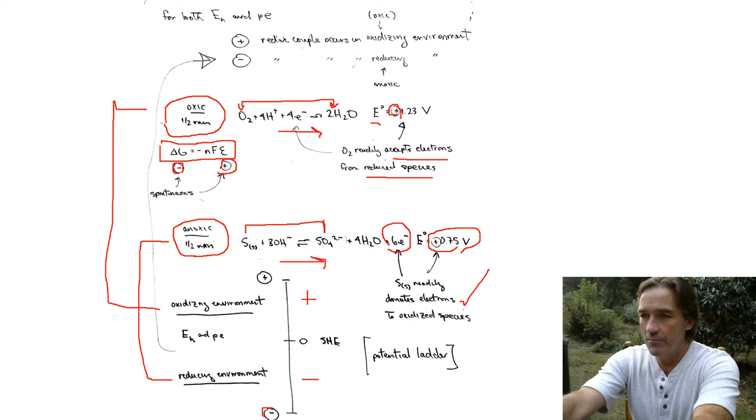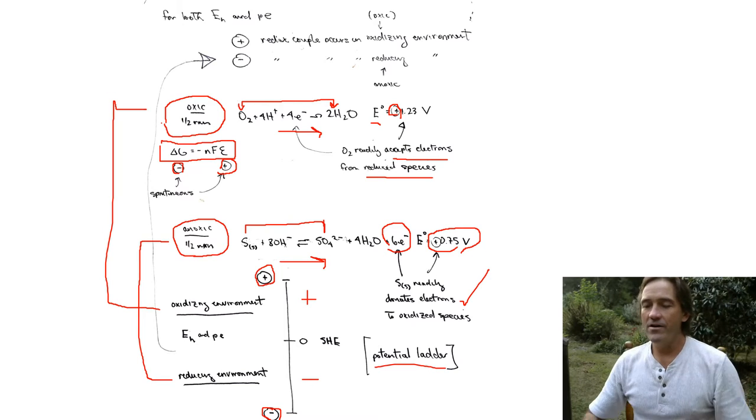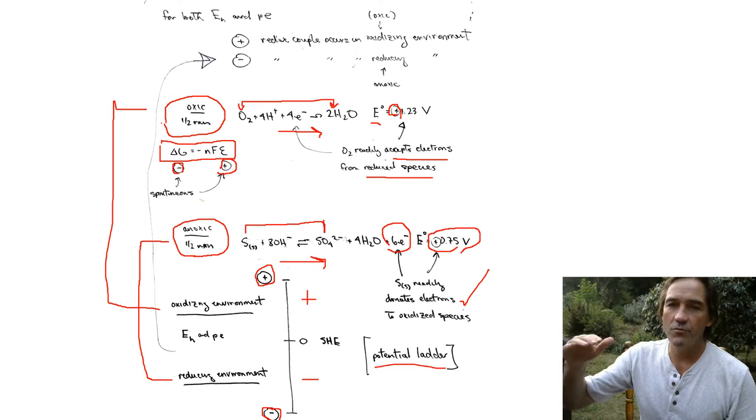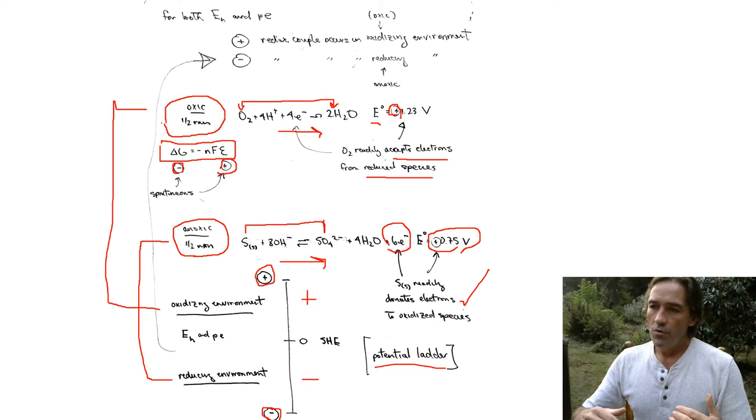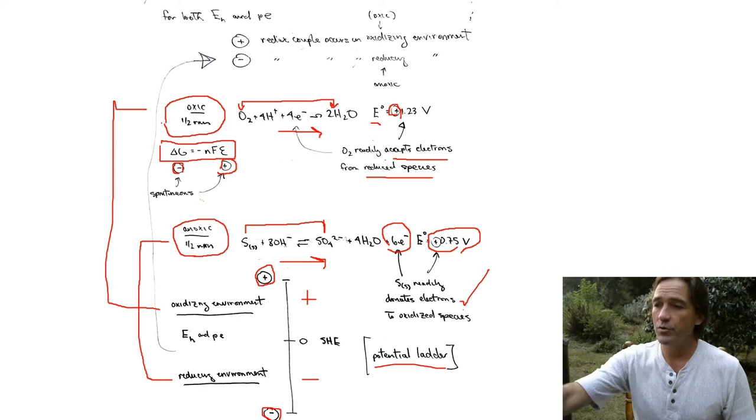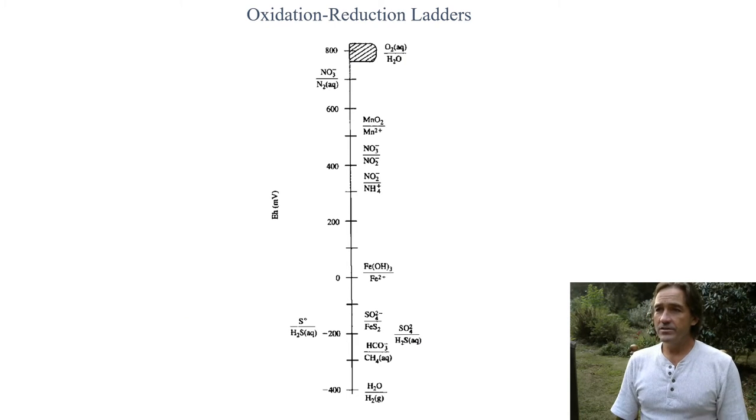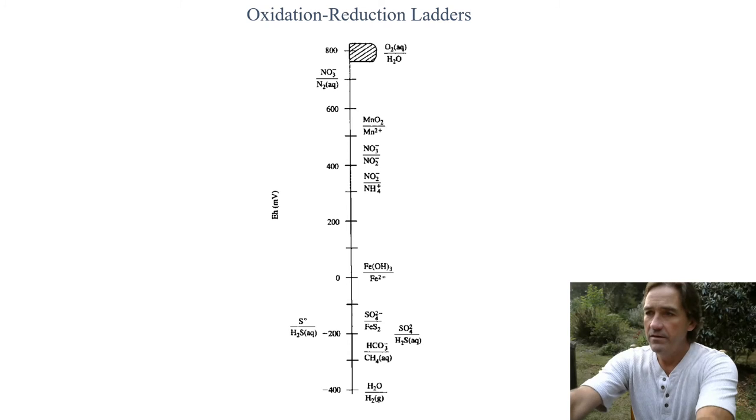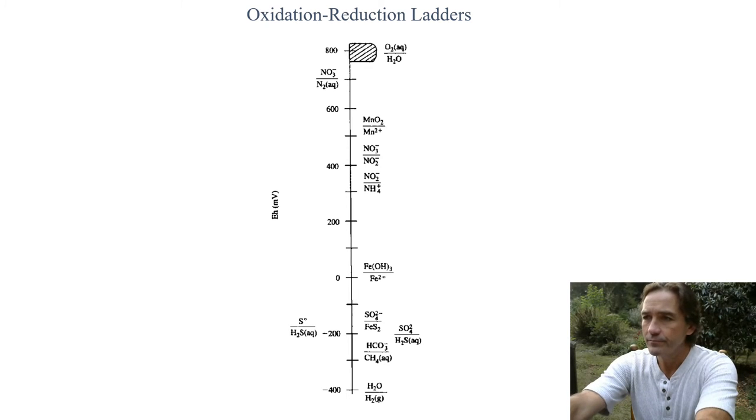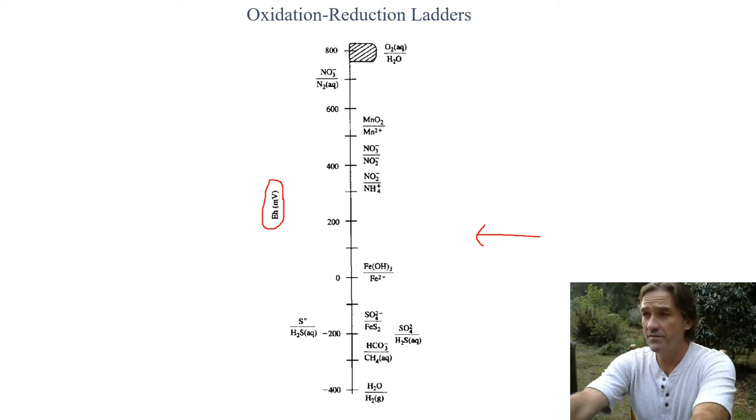This reaction will create an oxidizing environment. So what we'll end up producing, as I mentioned, this is all relative. We end up making a potential ladder of different reactions from positive to negative, so you can see the relative potential at which these reactions will occur. Here is an oxidation reduction ladder. This is useful. You can go out in the field and measure the EH or the PE.